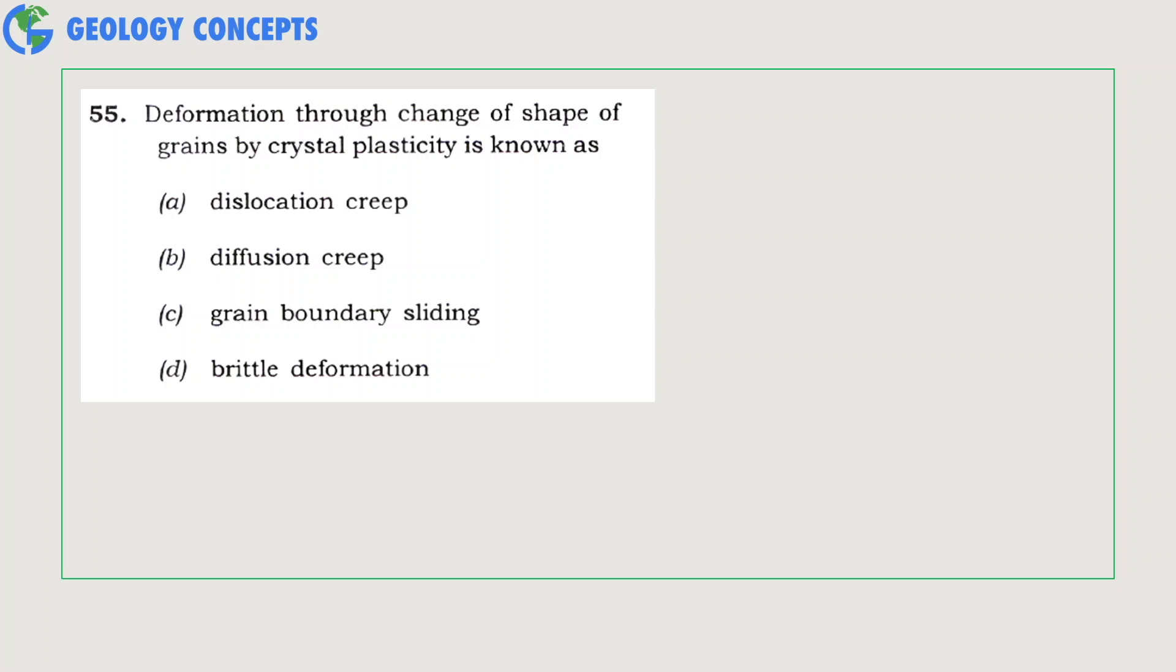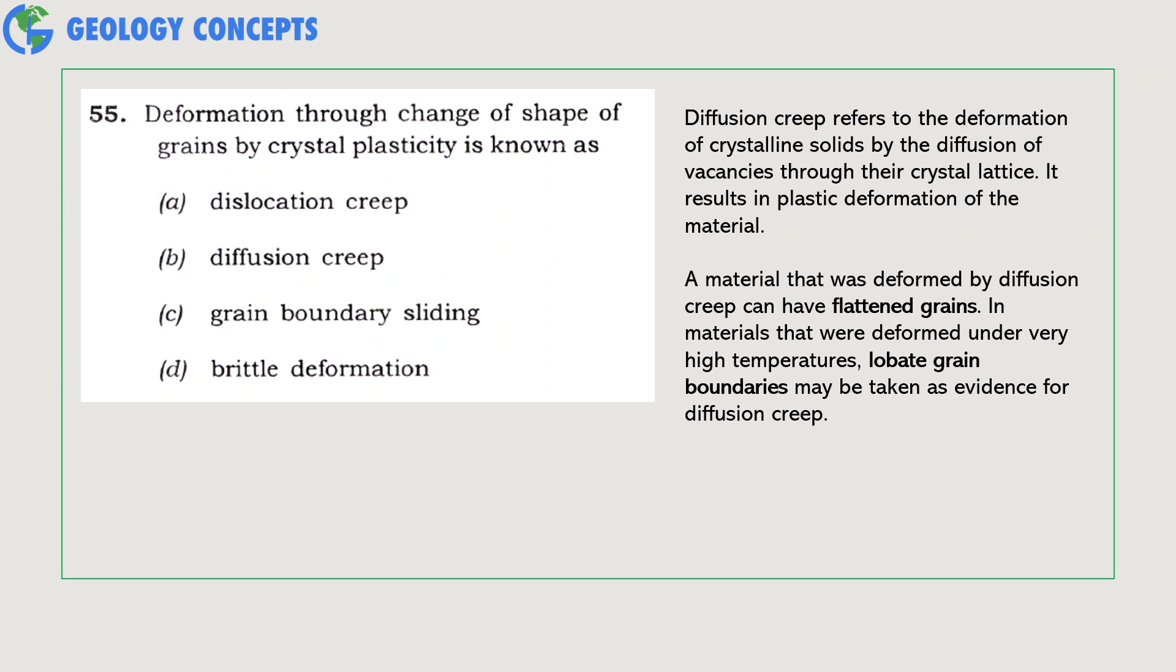Deformation through change of shape of grains by crystal plasticity is known as dislocation creep, diffusion creep, grain boundary sliding, or brittle deformation? Diffusion creep refers to the deformation of crystalline solids by the diffusion of vacancies through their crystal lattice. It results in plastic deformation of the material. A material that was formed by diffusion creep can have flattened grains. In materials that were deformed under very high temperature, low grain boundaries may be taken as evidence of diffusion creep. So option A is the correct answer.